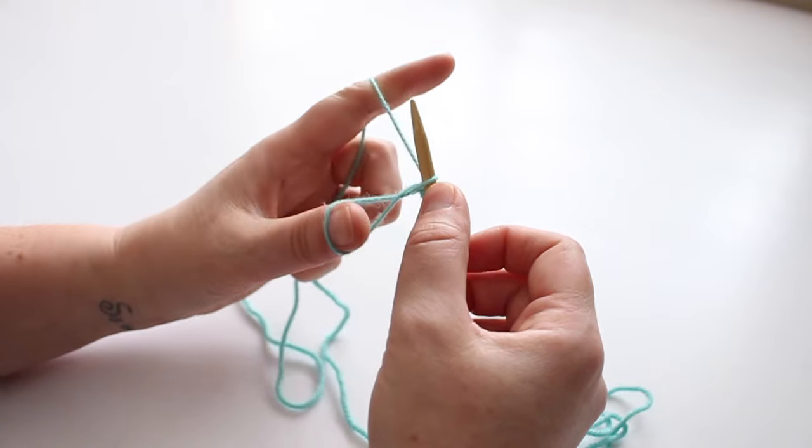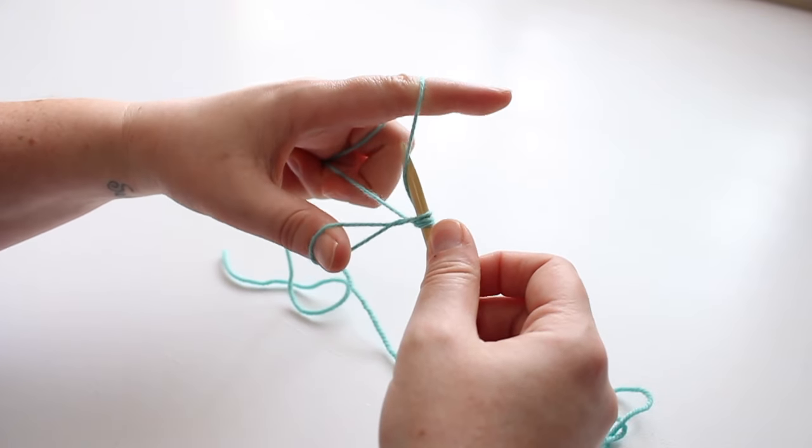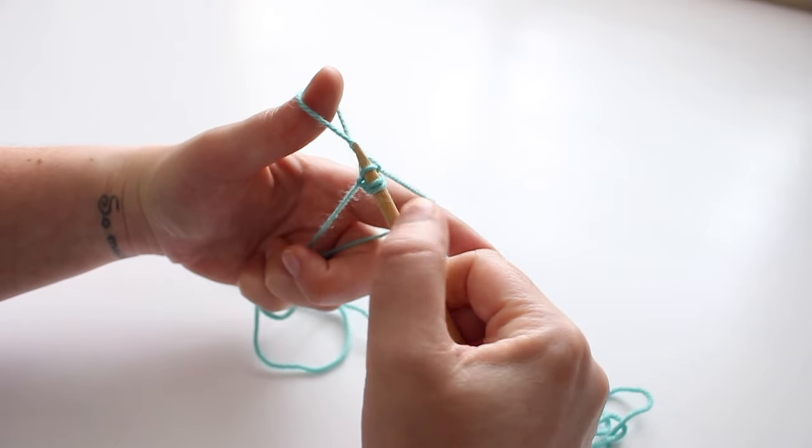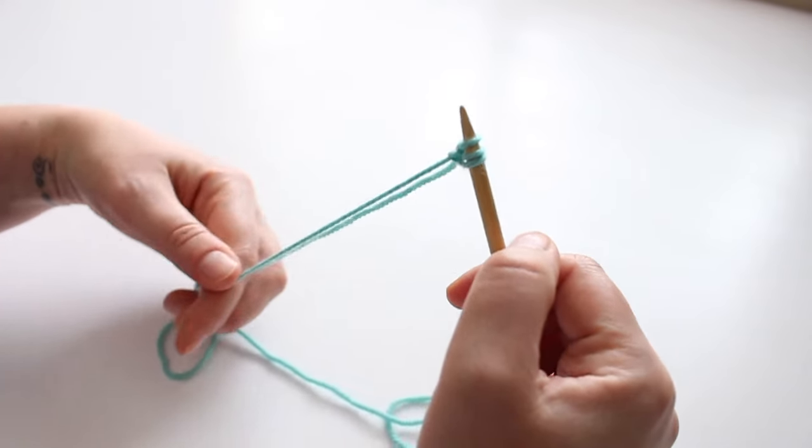Now we twist our hands and bring the needle behind the yarn over our pointer finger, bring it back through that tiny triangle and pull it snug.